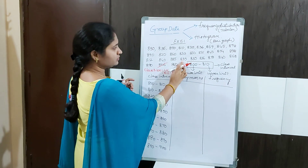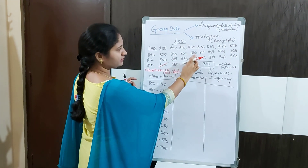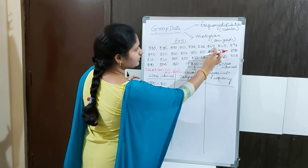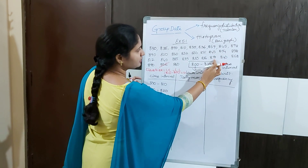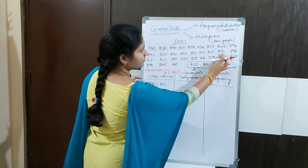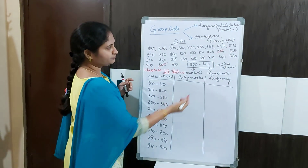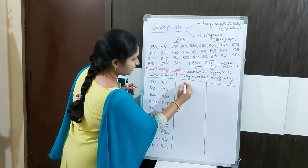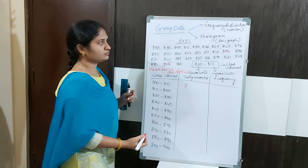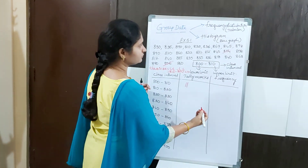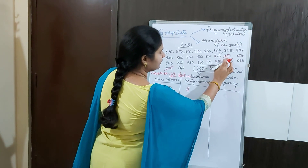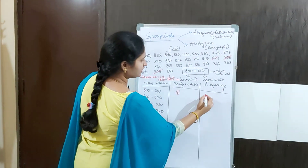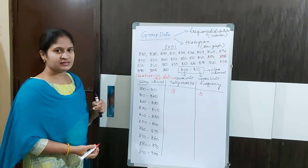So checking the data: for 800–810 we find values like 806 and 808, giving a frequency of 3 including 810 — wait, 810 is excluded. Counting carefully, the frequency for 800–810 is 3. For 810–820, counting 810 and 820 range values, we get a frequency of 2.